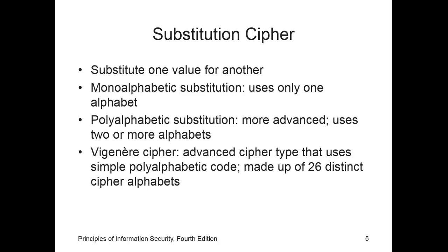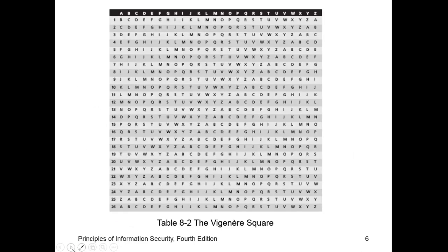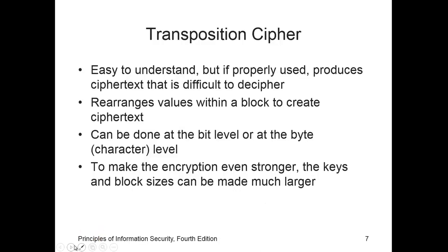This rearrangement can be done at the bit level or at the byte/character level. This figure shows the Vigenère square, which was used for encryption — viewing the cipher as a substitution where a different alphabet was used for each letter of the message, with the alphabets repeating periodically according to some key. The transposition cipher rearranges values within a block; for example, bit 1 becomes bit 4 and bit 2 becomes bit 7.